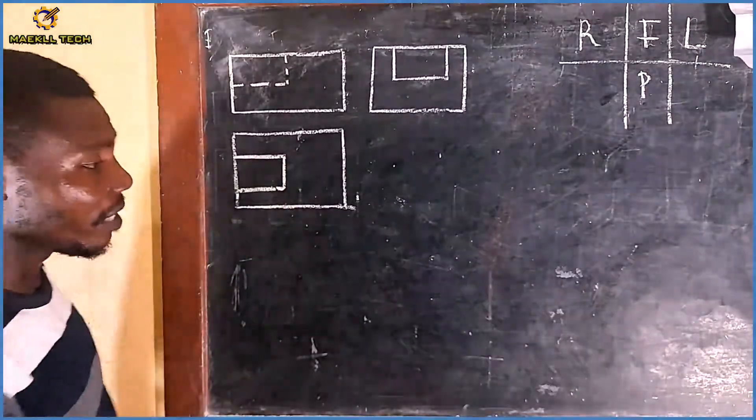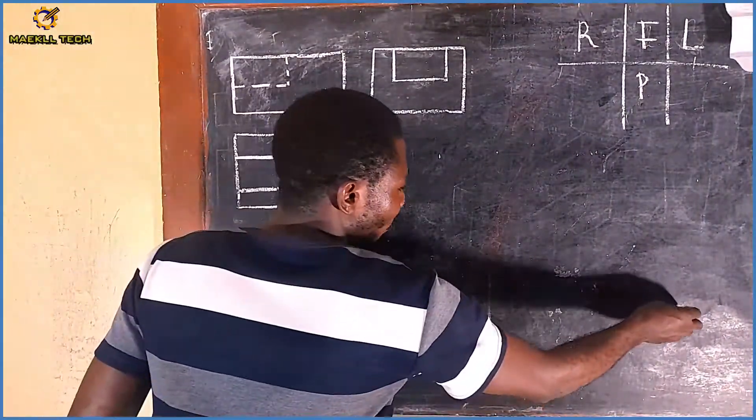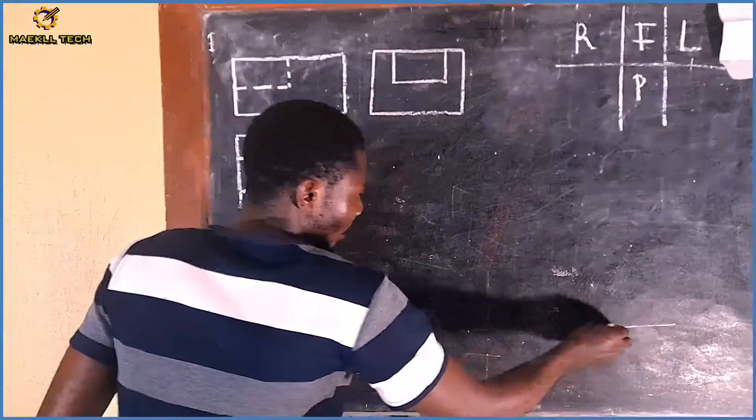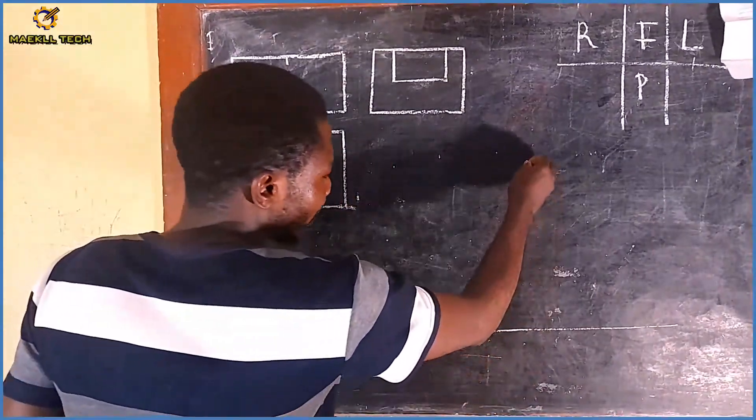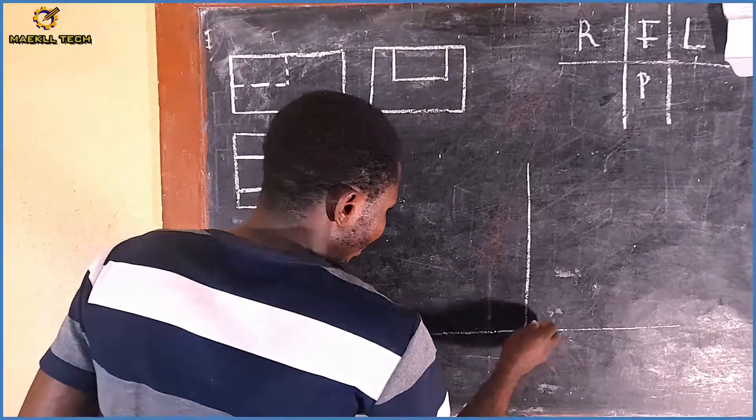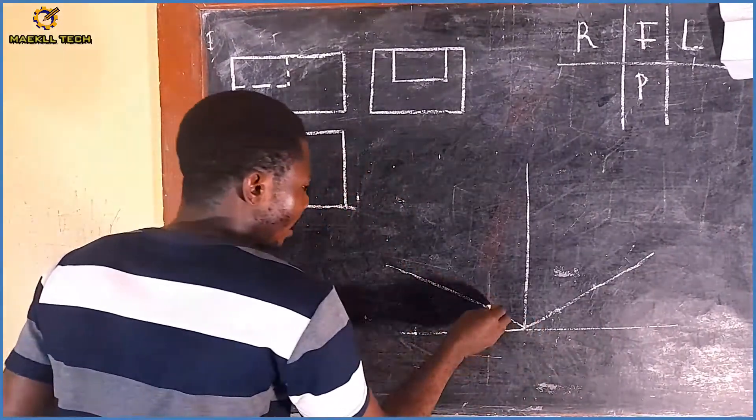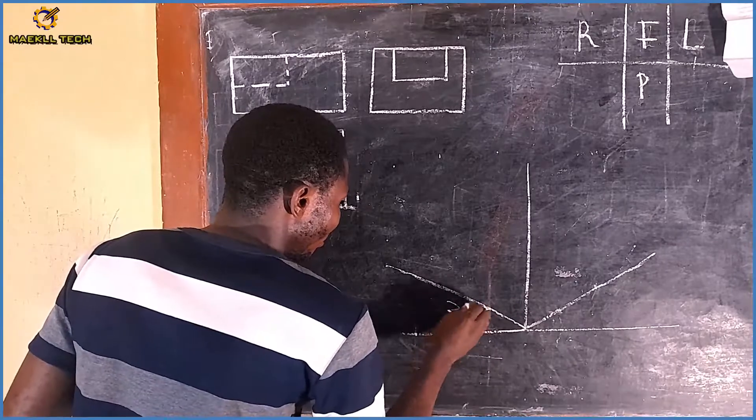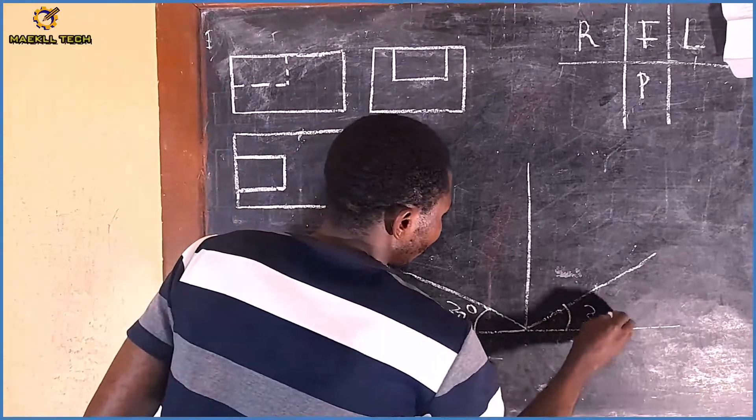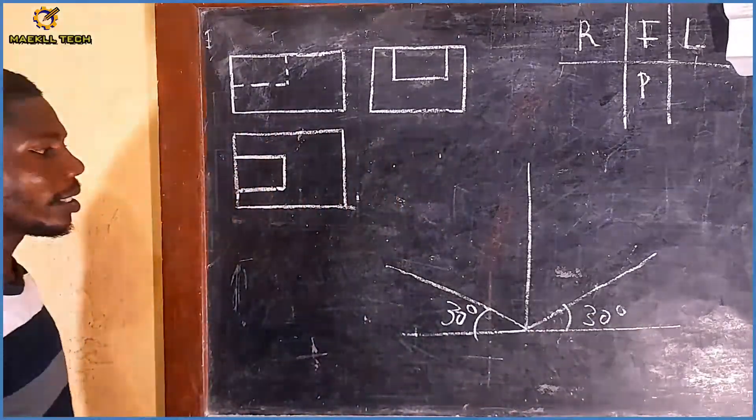Since we all know that this is the first angle, the very first thing is to project our isometric axis: my horizontal line, the vertical line, this right here, this right here, 30 degrees, 30 degrees. So that is it.